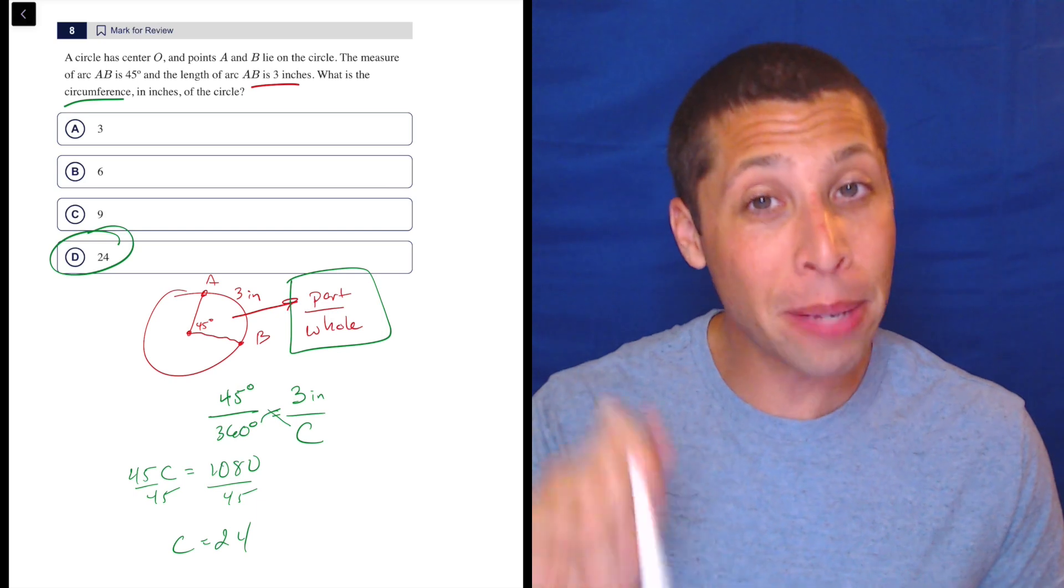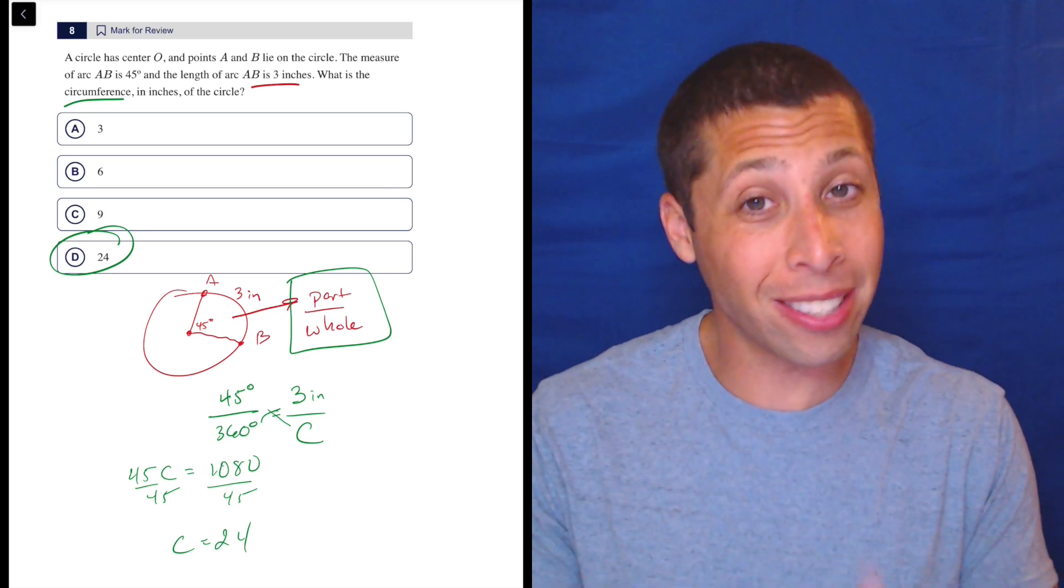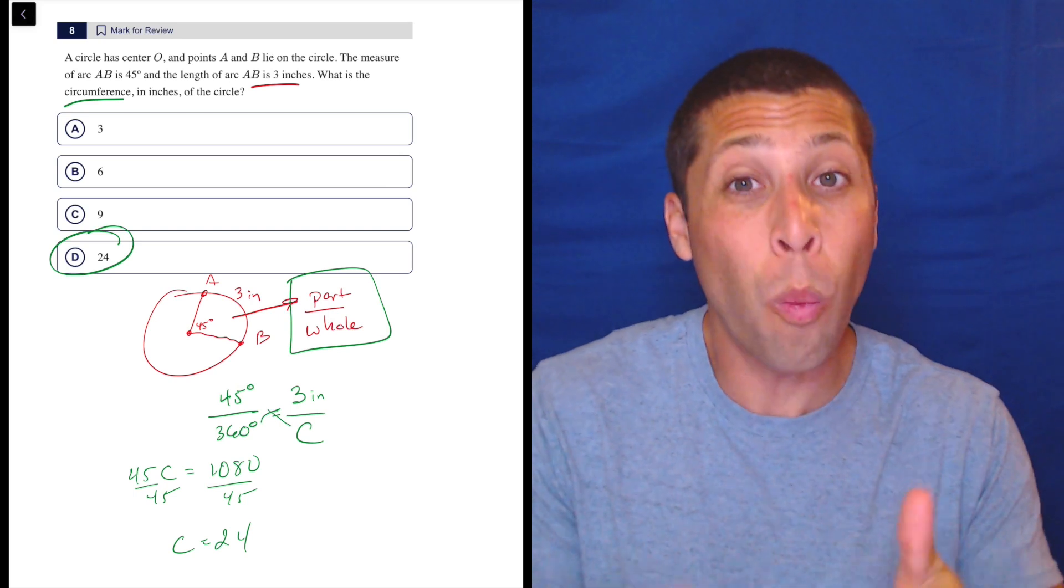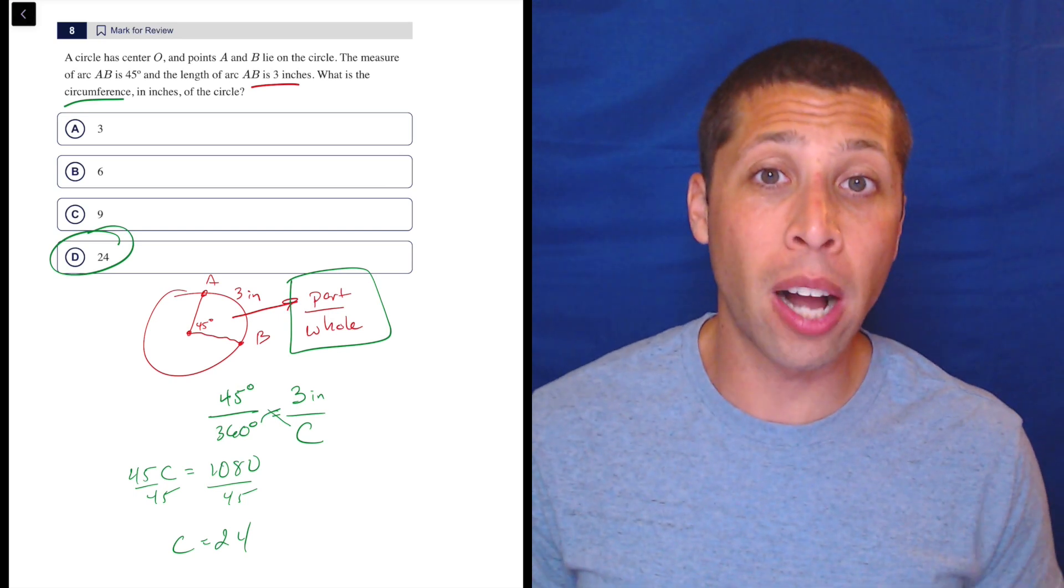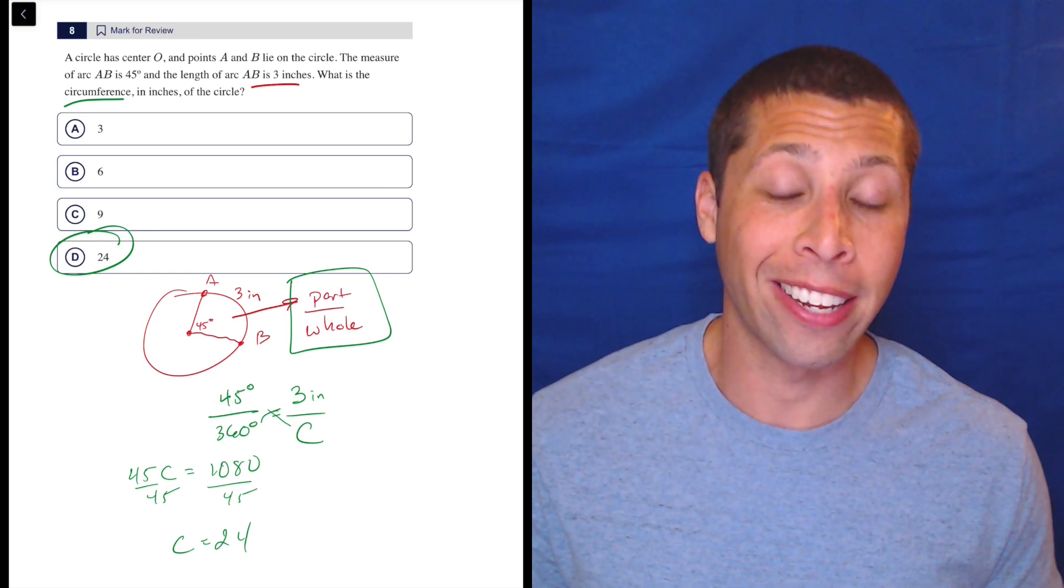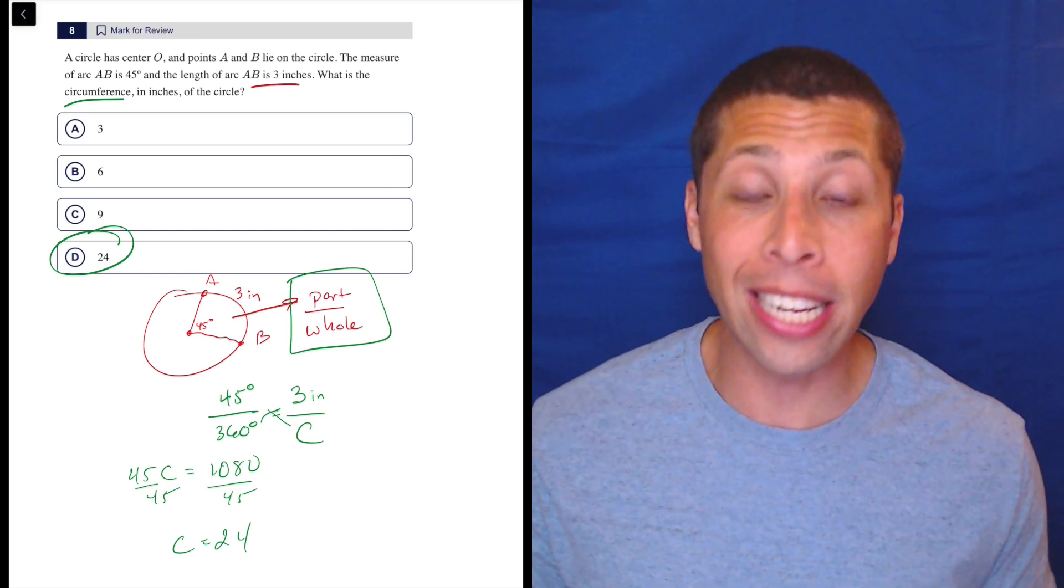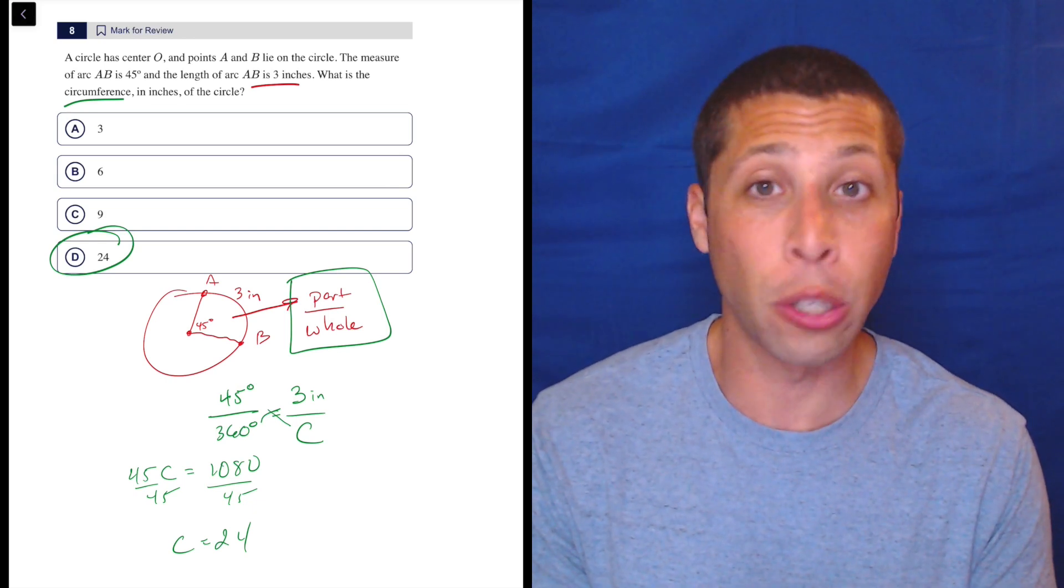So you got to be comfortable with this because in this case, it's kind of the only thing we're doing. But in most questions where I see them ask about this, it's one of many things. You're already going to be confused by everything else going on, so you need to be comfortable with this part over whole idea so that you're not getting lost completely. Anytime there's a slice of a circle, you want to think part over whole is the fraction. It's a very useful formula to know.